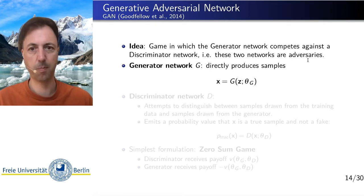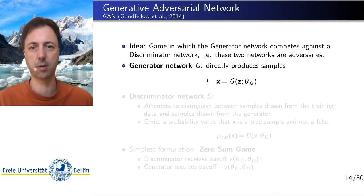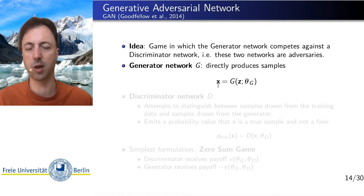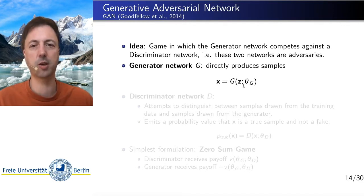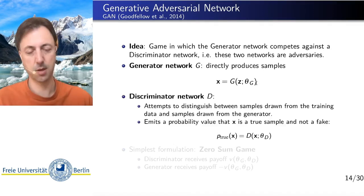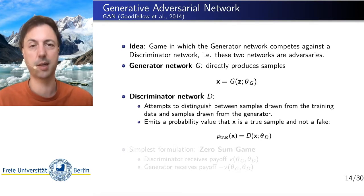The generator network is the network that produces the samples of the objects that we are interested in — X — which may be an image from a probability distribution we are interested in, for example from an image database. This is an output of the generator network, and as input it receives a sample from a simple probability distribution, such as a multivariate normal distribution, and it also depends on trainable parameters theta G.